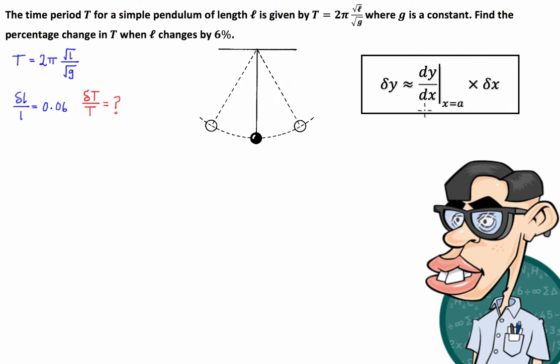Now the methods of small changes basically says that the change in the dependent variable can be approximated by the derivative of the function evaluated at the original point multiplied by the change in the independent variable. So we're going to exploit this to find the percentage change in T or δT on T.